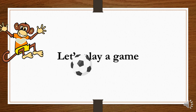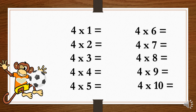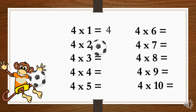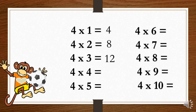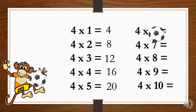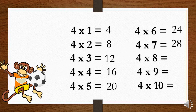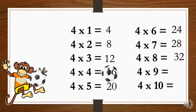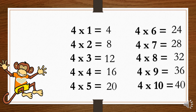Let's play a game. 4×1=4. 4×2=8. 4×3=12. 4×4=16. 4×5=20. 4×6=24. 4×7=28. 4×8=32. 4×9=36. 4×10=40.